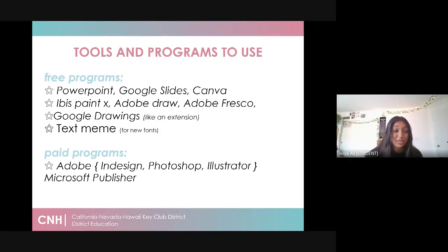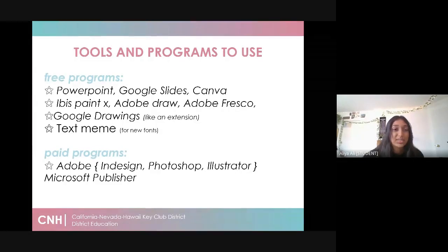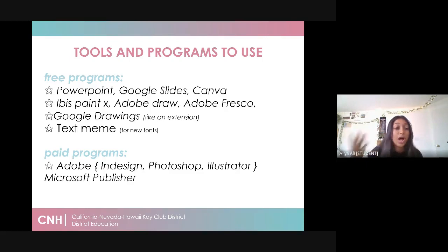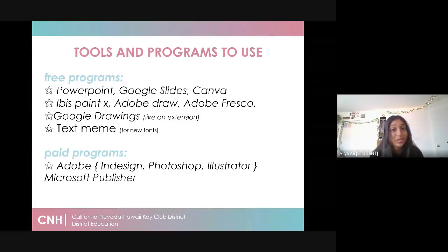Next off is Google Drawings — it's an extension you can put on your computer via the Chrome Web Store. It's really nice because you can add text. For example, if you're working on Canva and Canva doesn't have the CNH graphic standard fonts you need, download from Canva and put it into Google Drawings where you can insert the fonts you need, like Century Gothic or Verdana. Also, Text Meme has really funky fonts you can use in your newsletter or graphics. Recently CNH has been using the Hello Stranger font — it's a really nice cursive font.